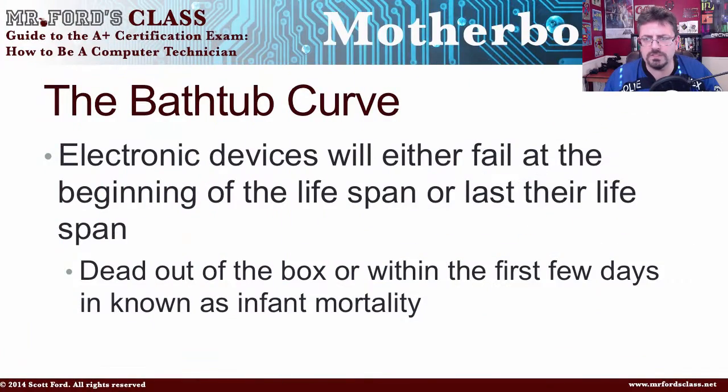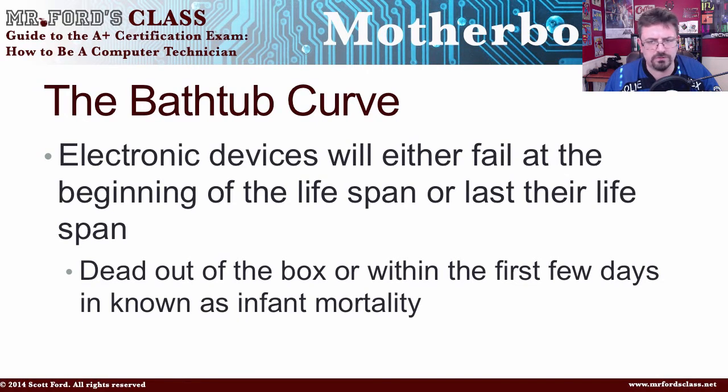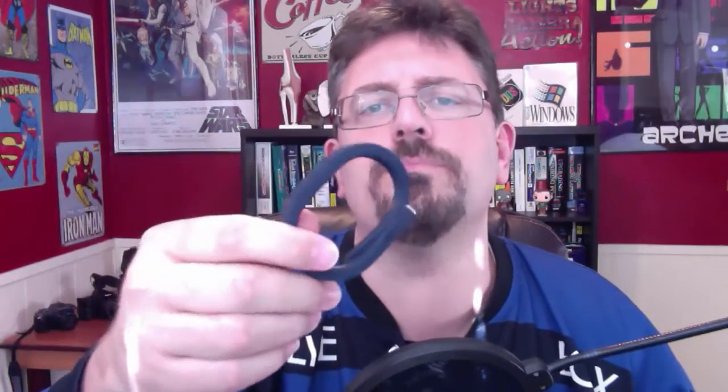The other thing we need to know when dealing with electronics is the bathtub curve. Electronic devices will either fail at the beginning of the lifespan — within the first 30 to 60 days — or they last their lifespan. For example, I have here a Jawbone Up, one of these walk-tracker things, and it died within 60 days. This was a defective device — a lemon. It came with a manufacturer defect. If it didn't die within the first 30 to 60 days, then it would have lived its lifespan, typically, unless you beat it up.